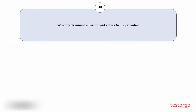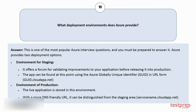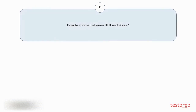Question number 10: What deployment environments does Azure provide? Azure provides two deployment options. 1. Staging environment: It offers a forum for validating improvements to your application before releasing it into production. The app can be found at this point using the Azure Globally Unique Identifier in URL form. 2. Production environment: The live application is stored in this environment. With a more DNS-friendly URL, it can be distinguished from the staging area.